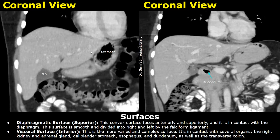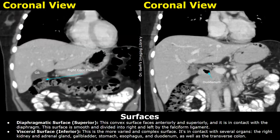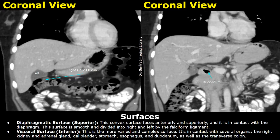This fluid-filled structure is the gallbladder. In this image you can see that the liver is also in contact with the duodenum right here at this point. A small margin of the liver is also in contact with the transverse colon. Here is the right colic flexure, also known as the hepatic flexure — it consists of a curve at the junction with the transverse colon. So you can see that the visceral surface of the liver is complex.